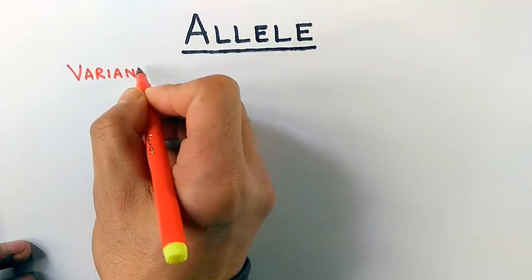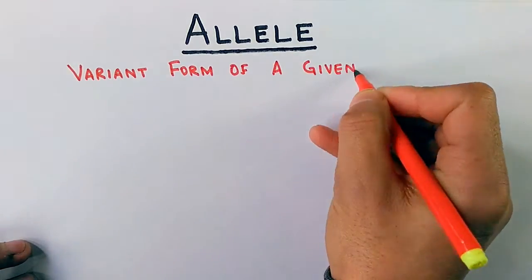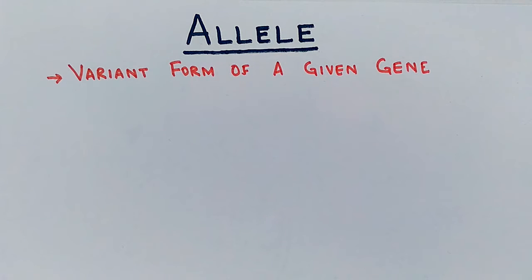First of all, we define allele as a variant form of a given gene, a different form or a different version of a gene. Like we have an Android operating system, it has got different versions like Nougat or Marshmallow, but the Android remains the same. So here the Android is the gene and the versions are the alleles.